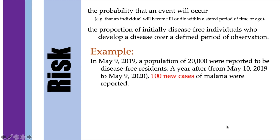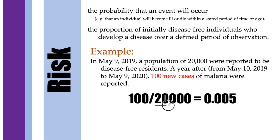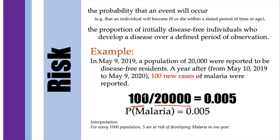For example, suppose that on May 9, 2019, a population of 20,000 were reported to be disease-free residents. A year after, from May 10 to May 9, 2020, 100 new cases of malaria were reported. This shows that out of the 20,000 disease-free individuals, 100 developed the disease over one year. So the risk is 100 over 20,000, or 0.005 — meaning for every 1,000 population, 5 are at risk of developing malaria in one year.